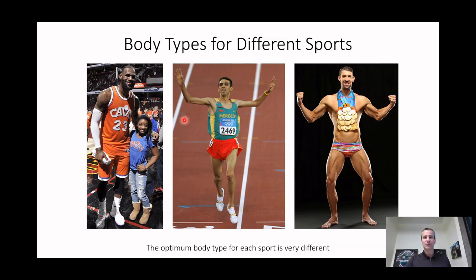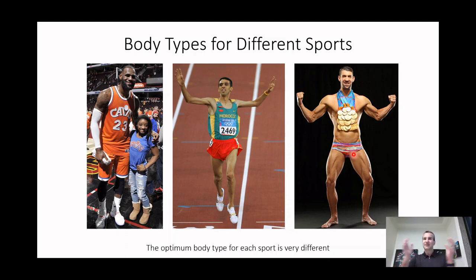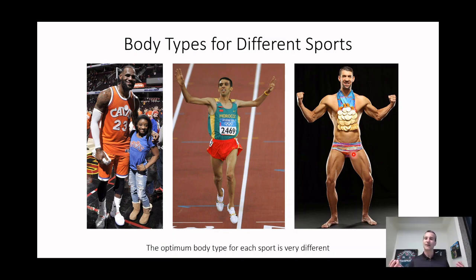Hicham El Guerrouj is still the world record holder for the 1500 meters and the mile. Alongside him is the greatest swimmer of all time, Michael Phelps — six foot six inches tall — while El Guerrouj is five foot nine. But their inseam, the length of their legs, is exactly the same. Phelps has a very long torso and quite short legs, plus really long feet and big hands — like wearing flippers in the water. Legs aren't buoyant; buoyancy comes from the body, so a long torso and short legs are ideal for swimming.